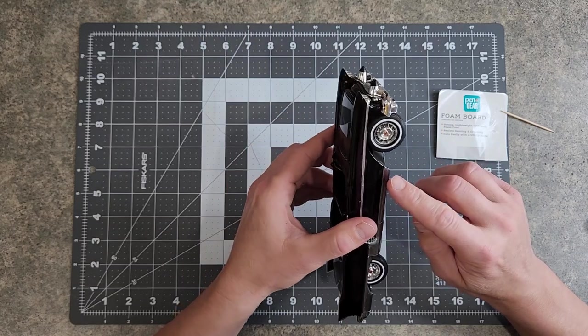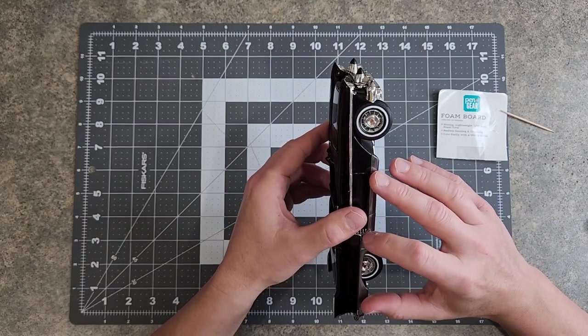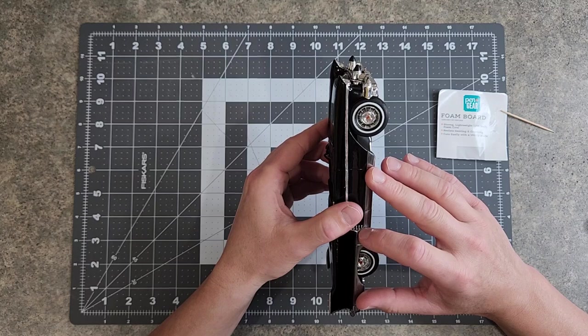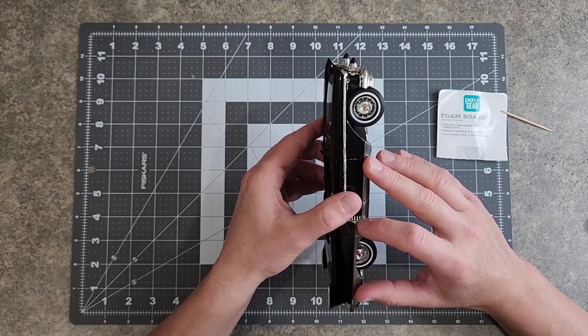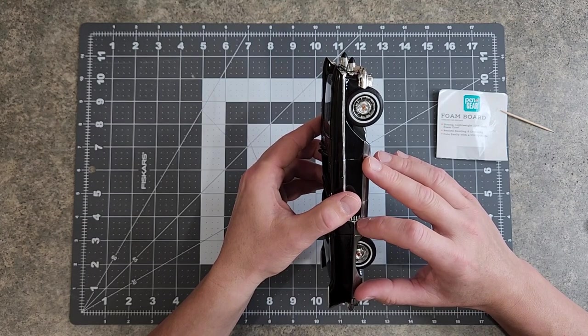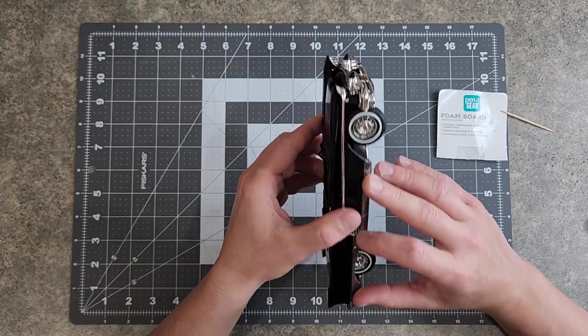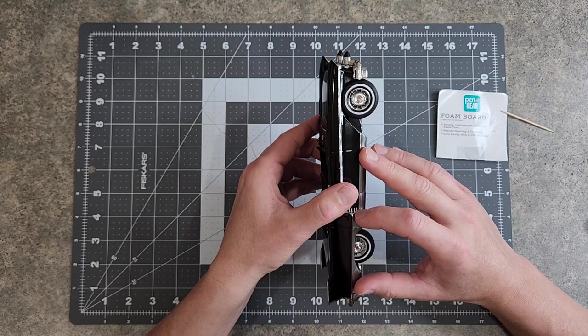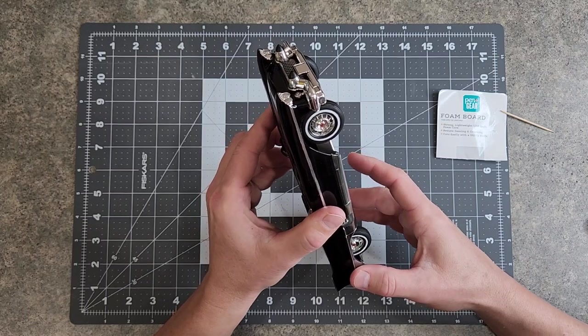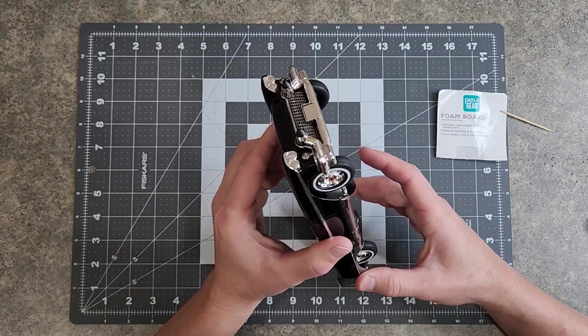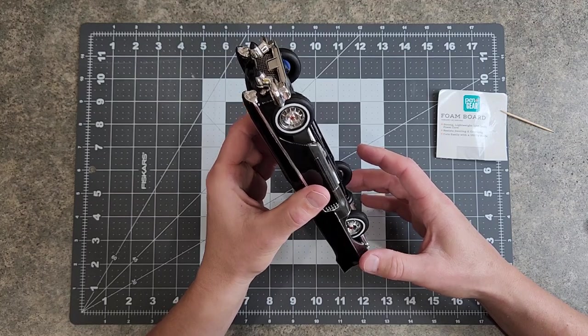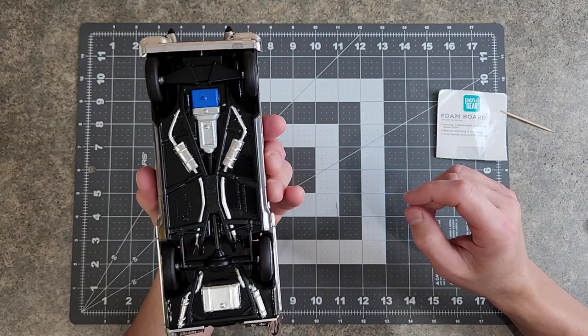I think there we have it. I got a little hanger on my bare metal foil on the door there. I don't know if you can see that. I'll have to get the toothpick out. Might need a little trim on that because it kind of popped up. And I think we have it.